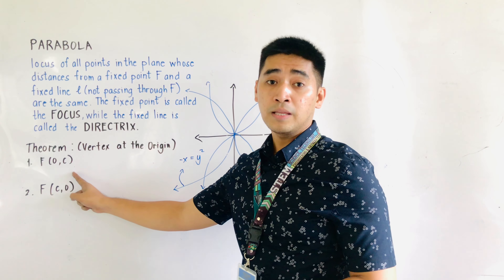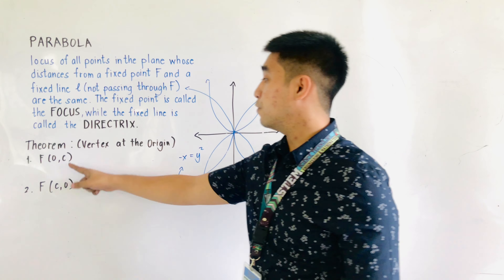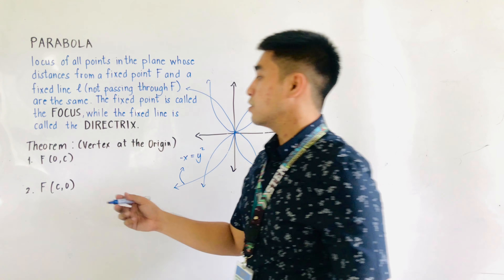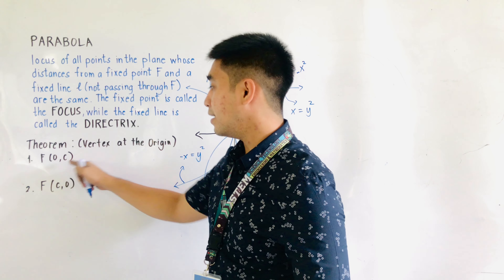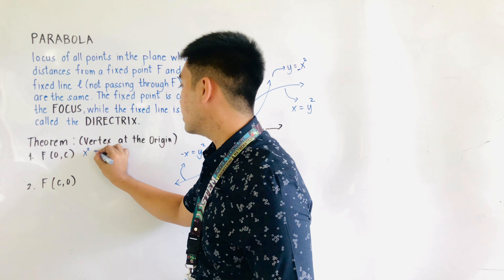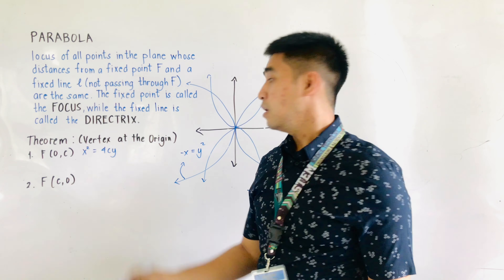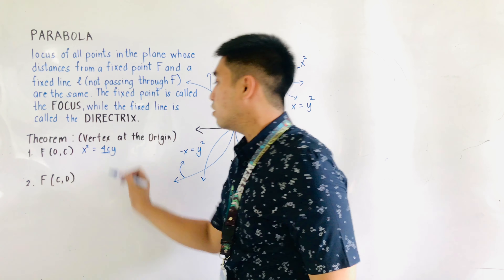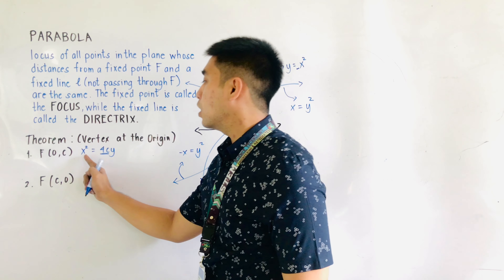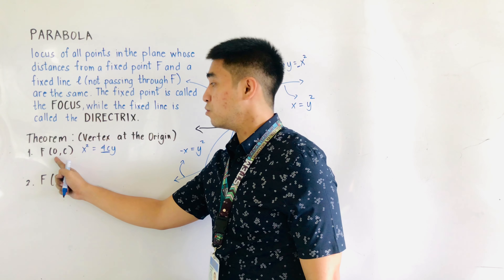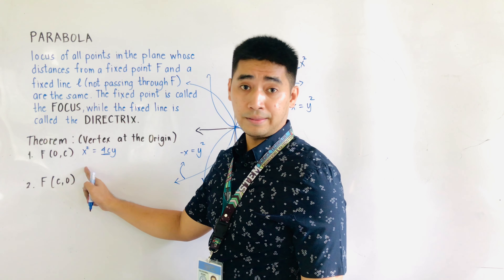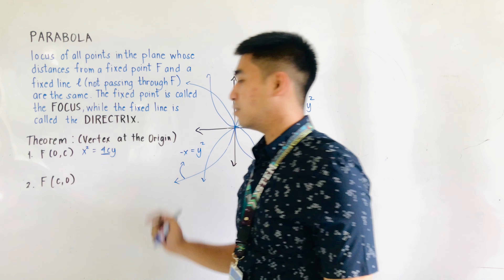Let us now apply what we have learned for the standard equation of the parabola with focus at (0, c). This is very easy. If we are given the focus at (0, c), our equation would be x squared is equal to 4cy. And 4c is the length of the latus rectum. Always remember, if you are given a focus having x coordinate as 0, that is the one that is being squared — x squared is equal to 4cy.